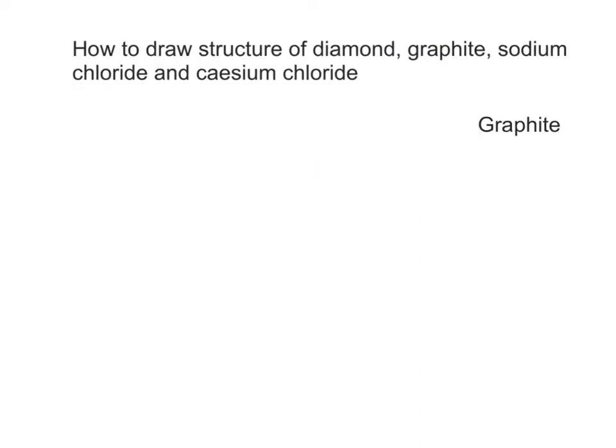Secondly, I will draw part of the giant covalent structure of graphite with a network of strong covalent bonds between carbon atoms. Each carbon atom is bonded trigonally to three other carbon atoms in a hexagonal layer manner.